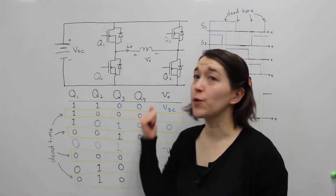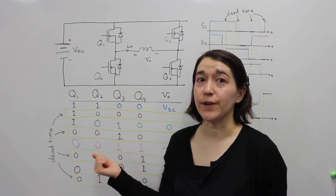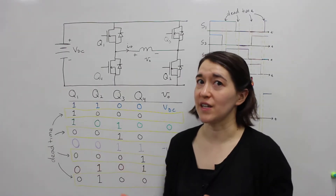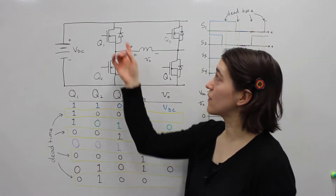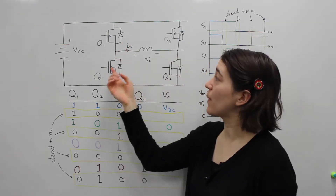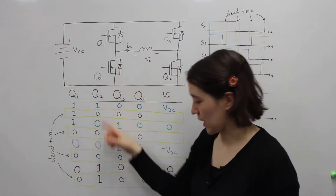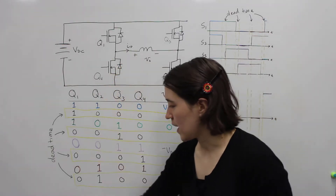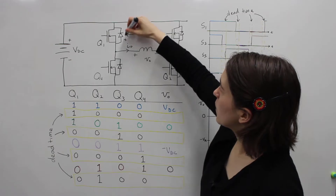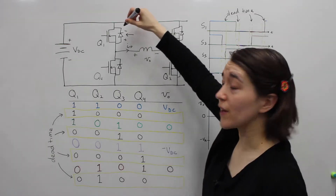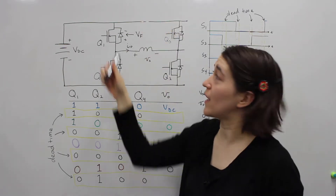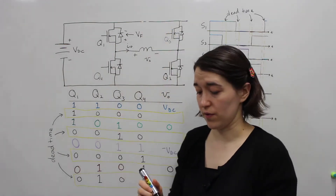Here we're looking at the full bridge inverter but this time with real switches instead of ideal switches. We've added MOSFETs and remember each of them has a body diode. When the body diode is on it will have this polarity and we're going to call that DF for the forward drop, and it's going to be the same for all of them.